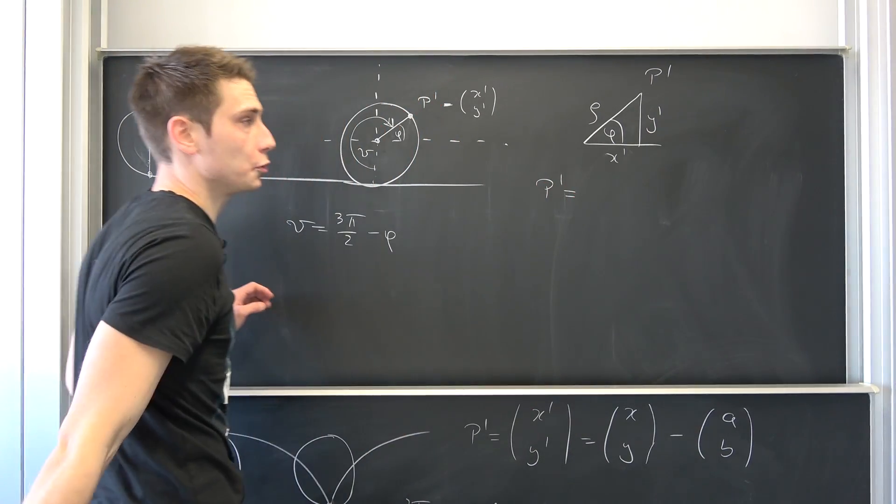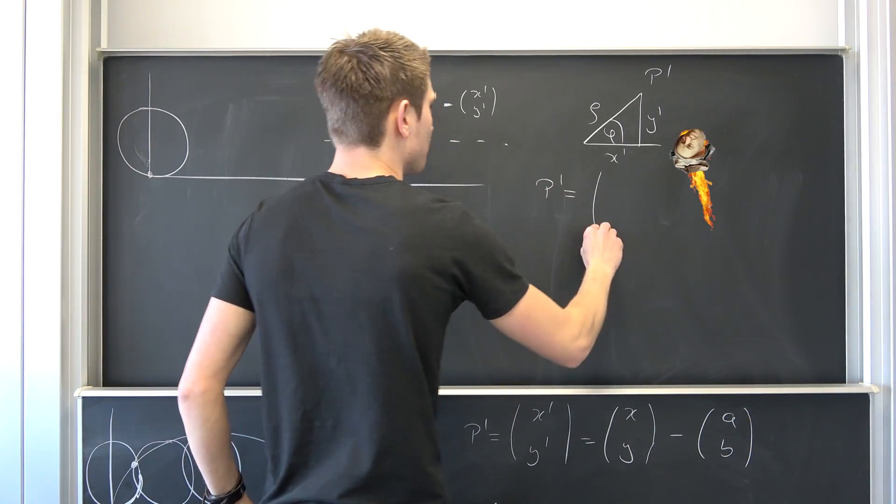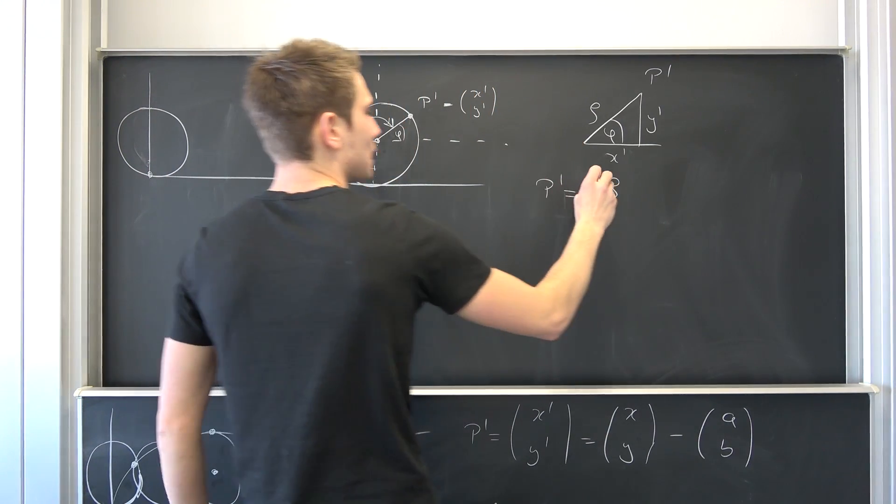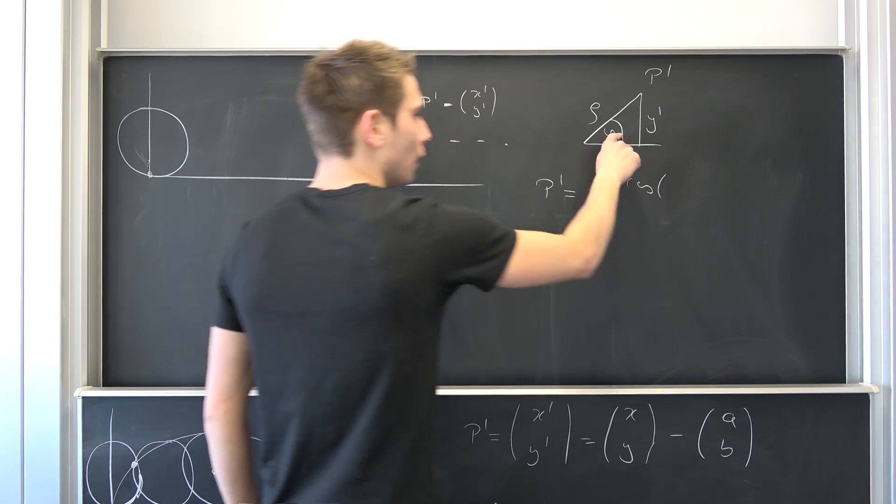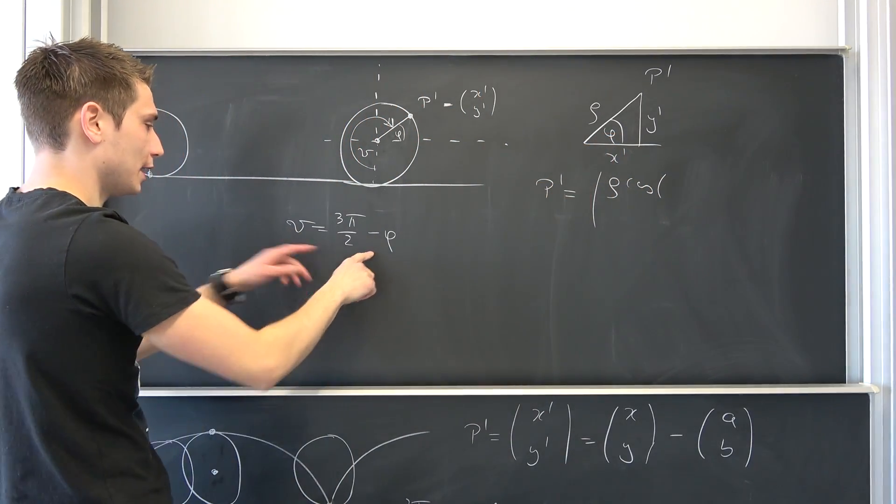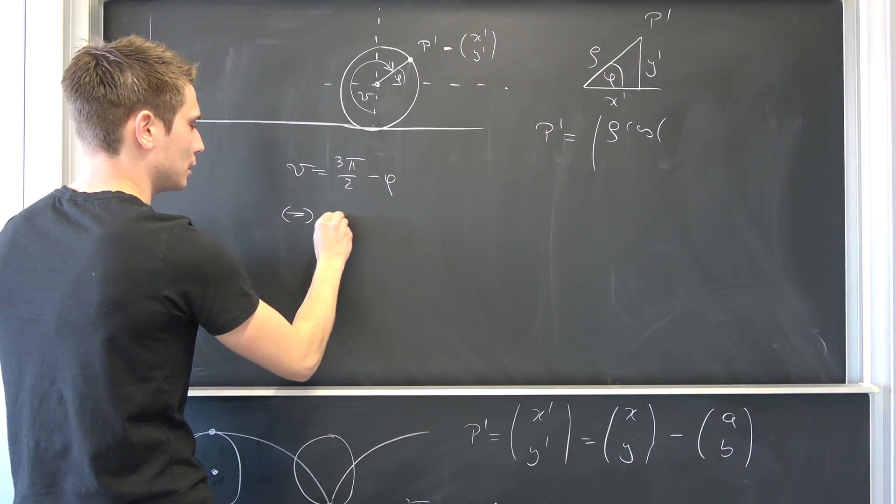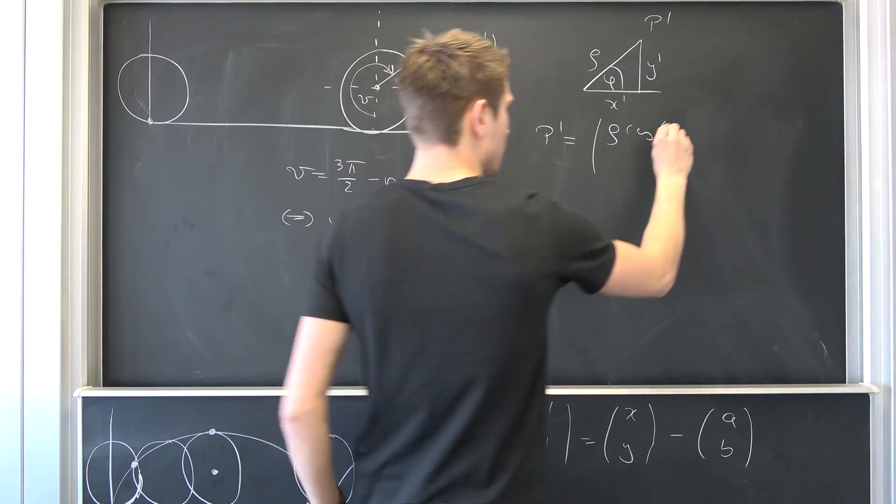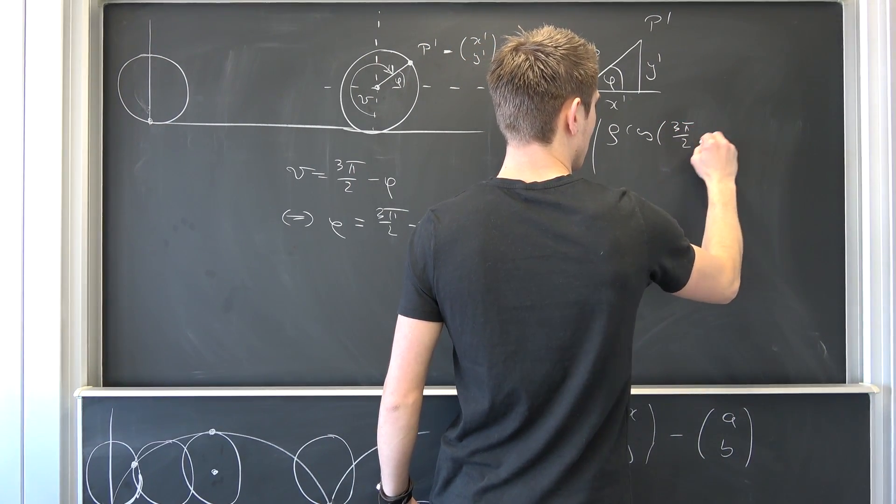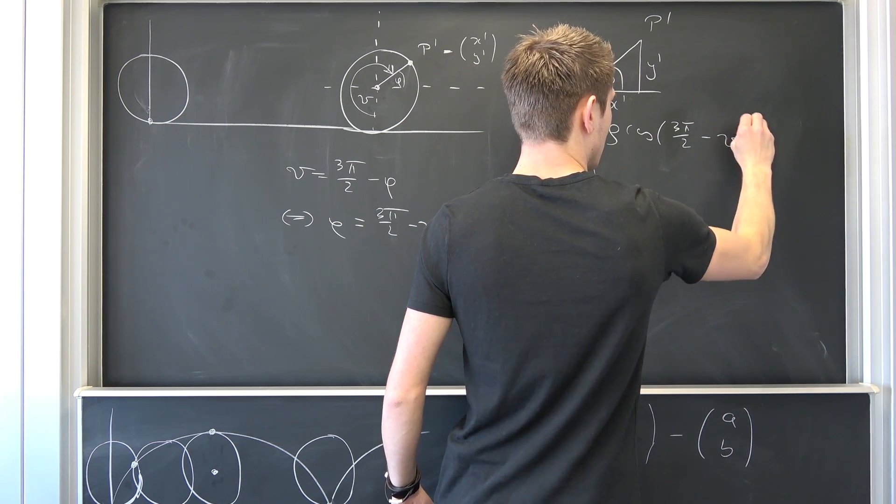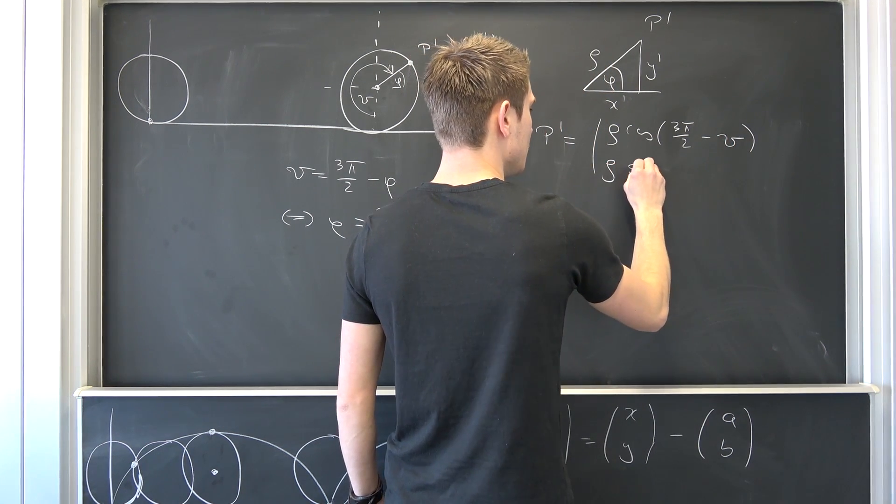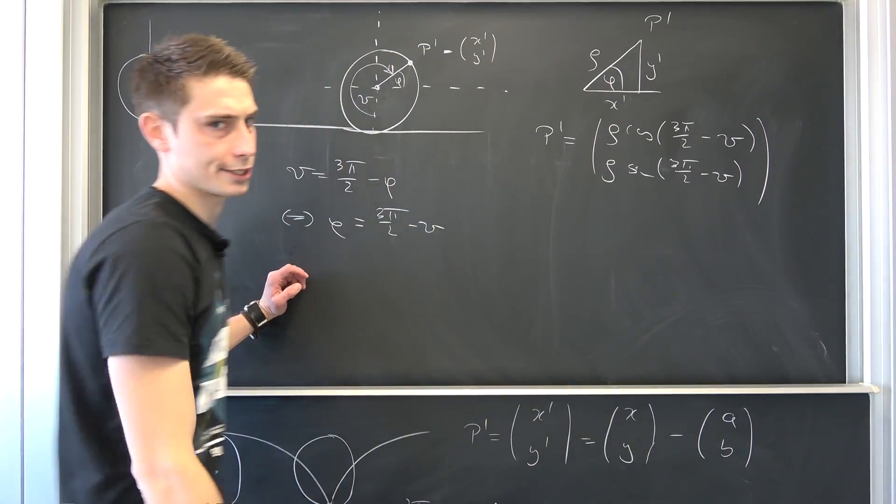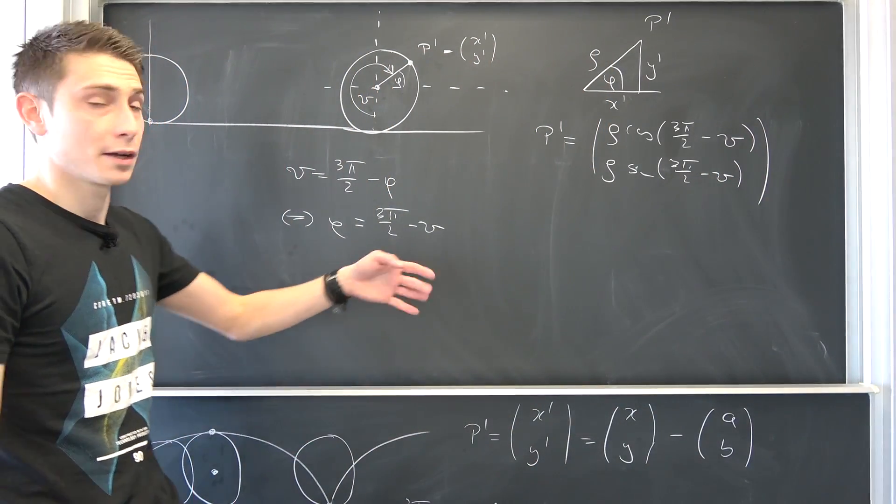Okay, our p' is going to be if we use Papa Pythagoras nothing but x' y' coordinate. Meaning it's nothing but rho times the cosine of phi. But phi is nothing but 3π over 2 minus theta. Same spiel down here, just with the sine this time. Okay, coolio.